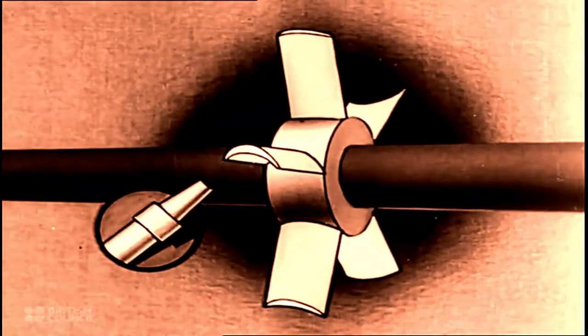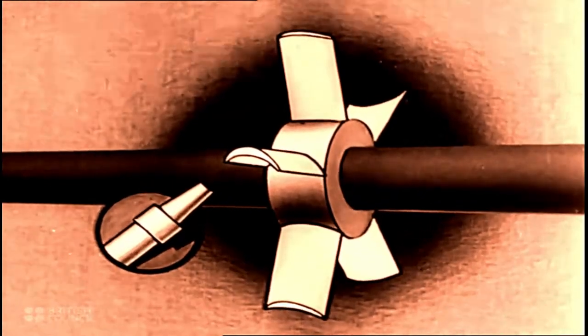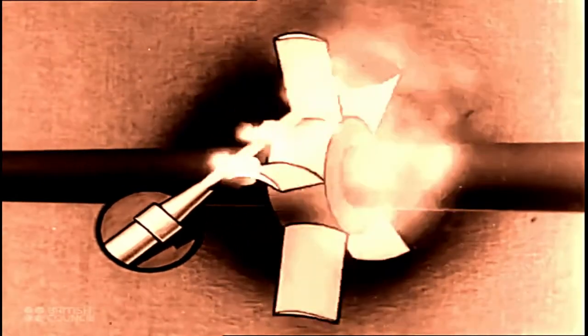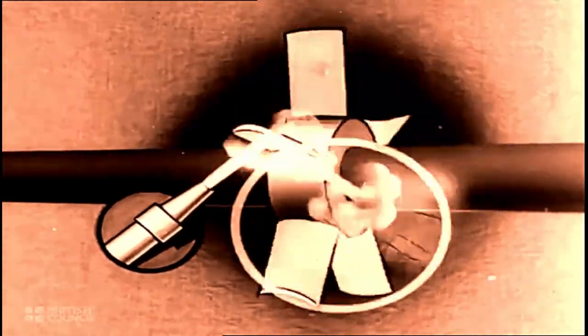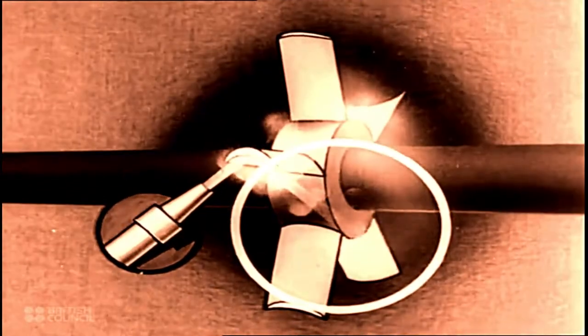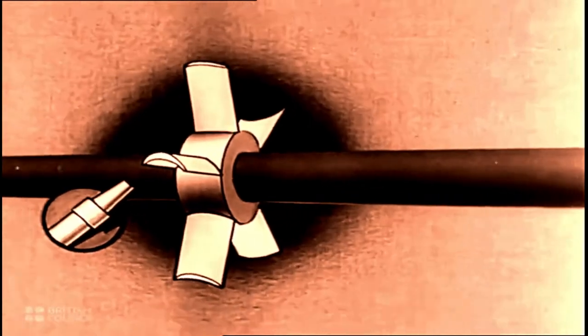At first, Parsons tried making a simple turbine rather like the one of Branca, but he very soon realized that the steam was not being efficiently used, that it still retained much of its energy after leaving the blades of the wheel. He hit on the idea of using this surplus energy to drive a second wheel and perhaps a third and fourth.